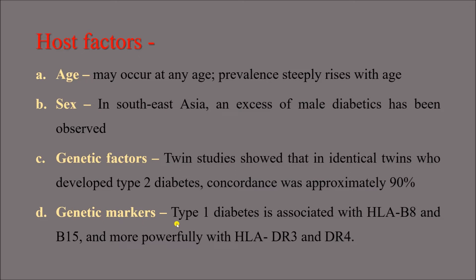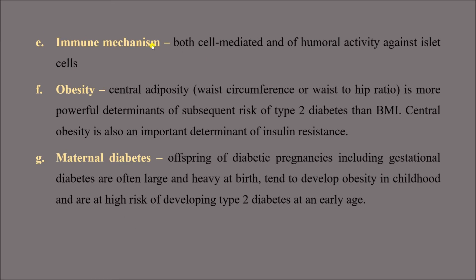Genetic markers: type 1 diabetes is associated with HLA-B8, HLA-B15, but more powerfully with HLA-DR3 and DR4. Immune mechanisms — both cell-mediated and humoral activity against islet cells have been observed to cause diabetes. Obesity, as already mentioned, is one of the most common risk factors behind all non-communicable diseases — mostly central obesity is of concern.